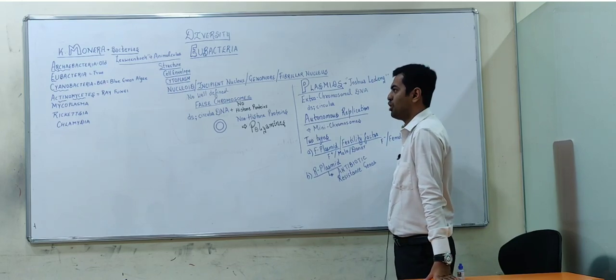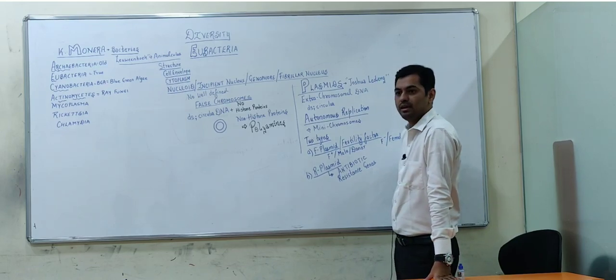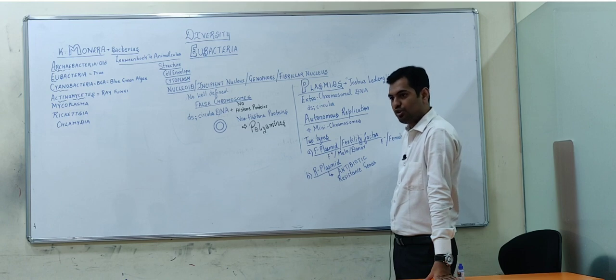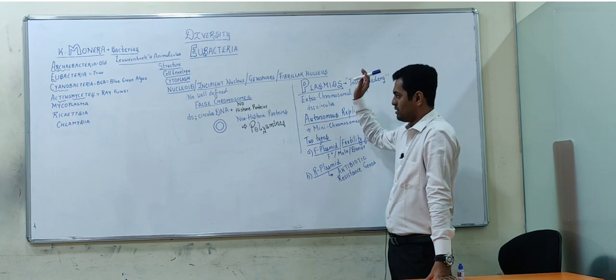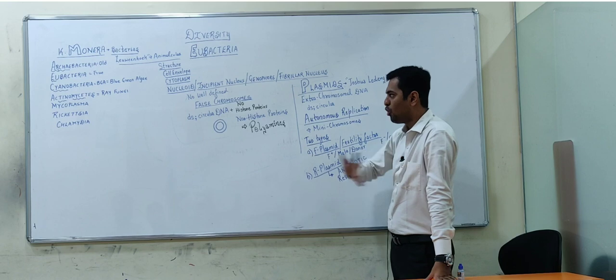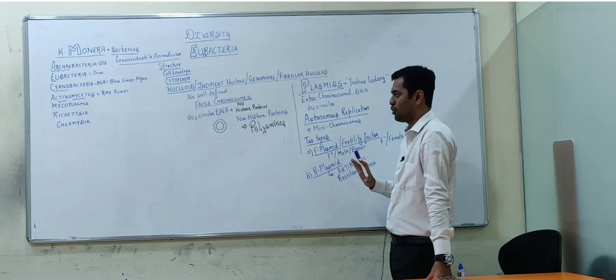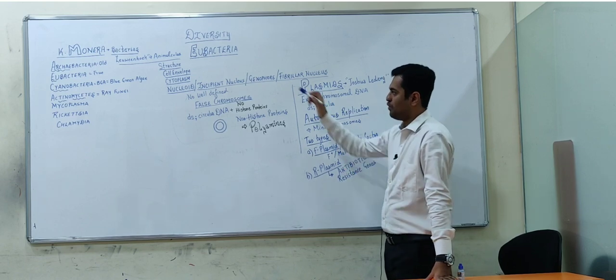So basically we have discussed about the nucleoid. Nucleoid, also known as incipient nucleus or genophore or fibrillar nucleus, has no well-defined boundary. There is no nuclear membrane, and it is known as false chromosome.